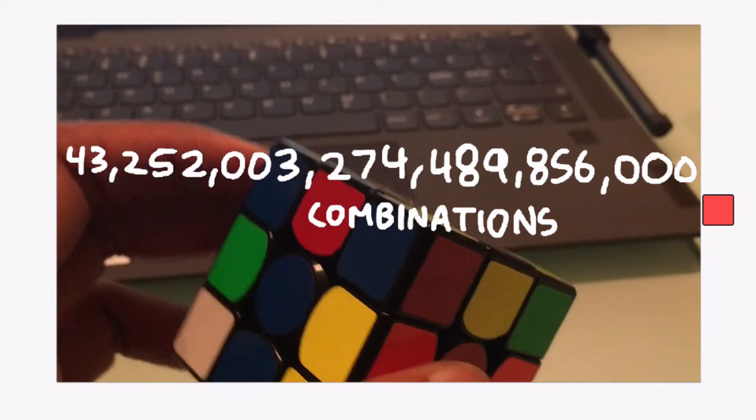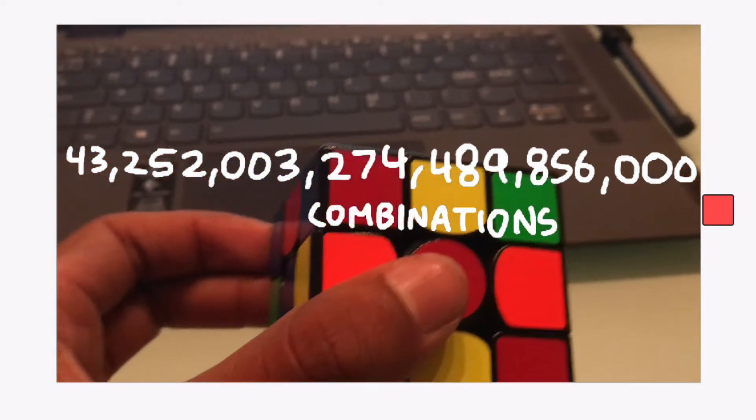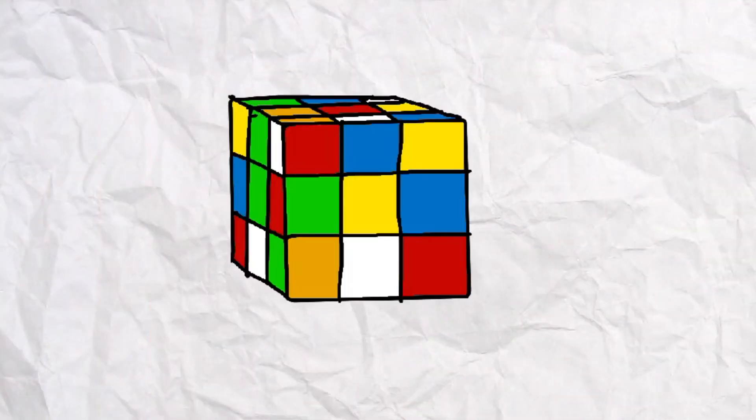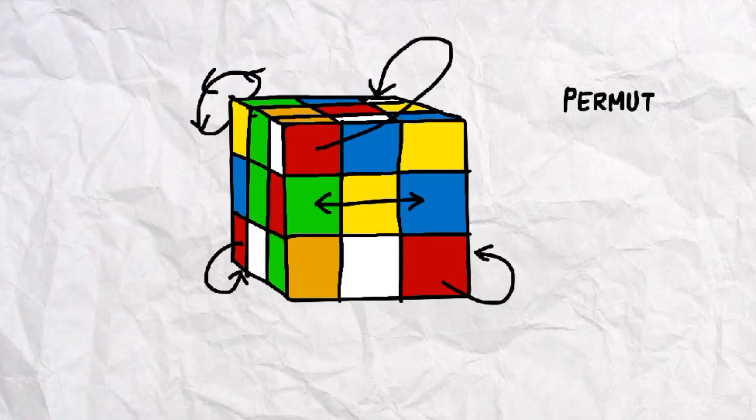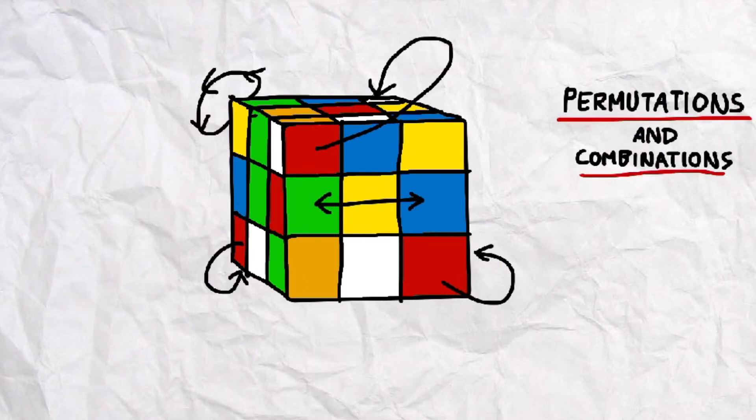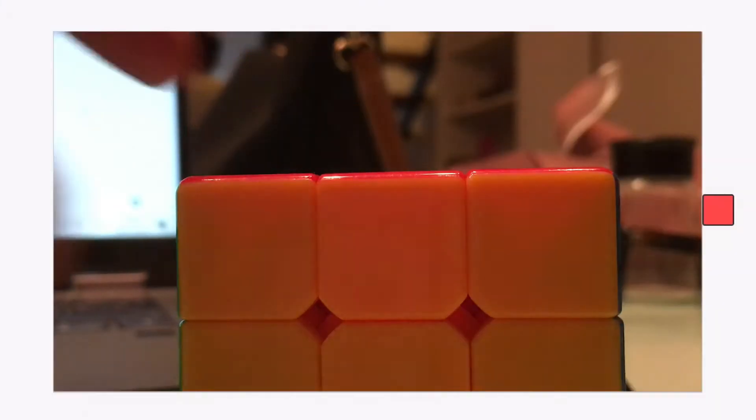The number 43 quintillion represents the number of possible scrambles on a Rubik's Cube. But instead of scrambles, think of that number as 43 quintillion permutations and combinations, meaning the number of ways the colors can be combined and permuted. So let's look at the cube itself.